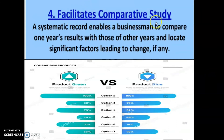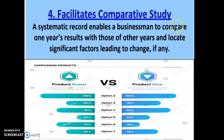The next advantage is facilitates comparative study. Systematic record enables a businessman to compare one year's results with those of other years and locate significant factors leading to change, if any. A businessman can use his own balance sheet, compare it with the previous year's balance sheet, and know the strengths and weaknesses and the areas to be corrected. He can also compare his own company's balance sheet with that of another company's balance sheet, facilitating comparative study and drawing conclusions regarding the working of the organization.